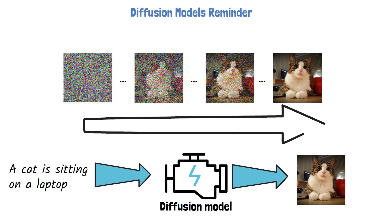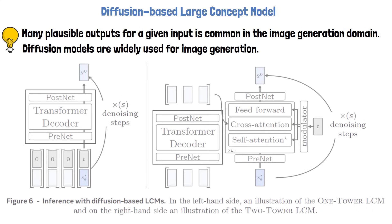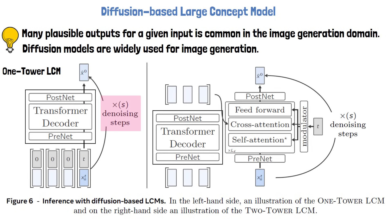The noise removal process usually takes between tens to thousands of steps, so it comes with a latency drawback. In training, the model learns to remove noise by first gradually adding noise to a clear image — this is the diffusion process. Inspired by this, a diffusion-based architecture is also explored for large concept models. The one-tower large concept model takes an input sequence of concepts along with a noisening timestamp: zero for all clean concept embeddings, and a noisy timestamp T for the last concept that needs to be denoised to produce the next concept prediction. The model runs for multiple steps, iteratively removing noise from the noisy next concept.